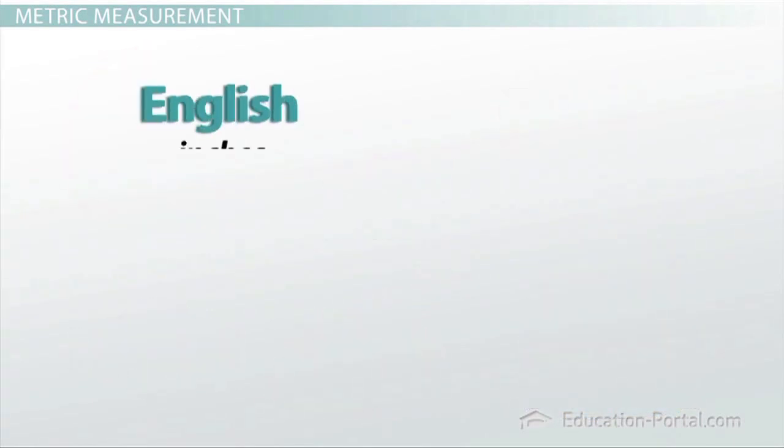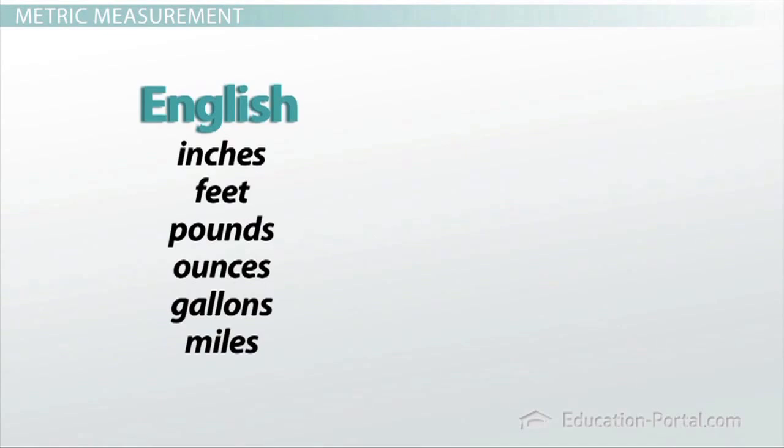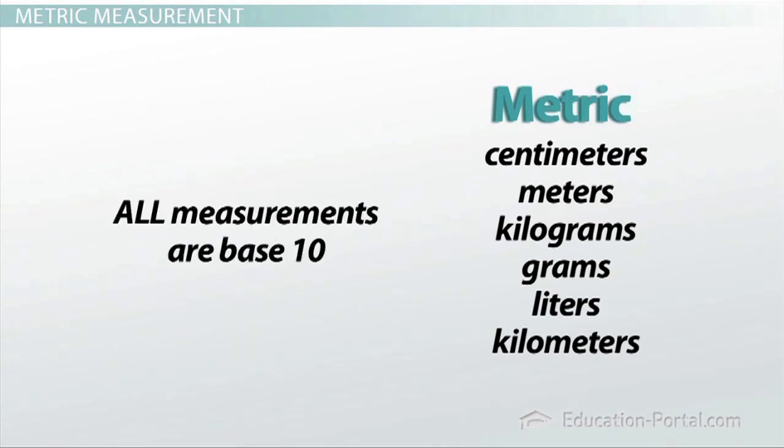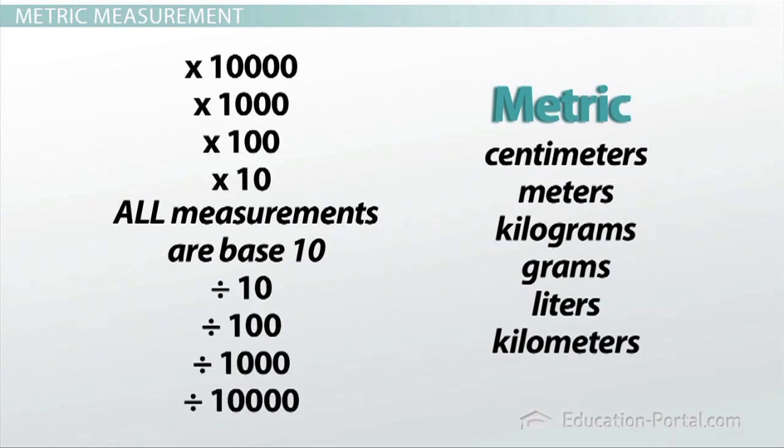Most Americans are taught the English or standard system of measurement, but never get a really good dose of the metric system. Lucky for you, it is a much easier system to learn than the English system because all the measurements are base 10, meaning that when converting from one to another, you will always be multiplying or dividing by a multiple of 10. This is much easier than trying to do calculations between ounces and pounds and feet and miles.